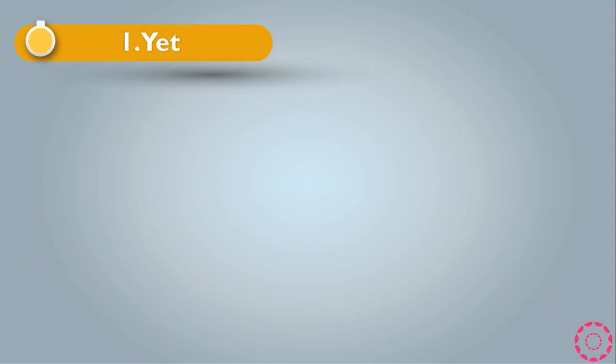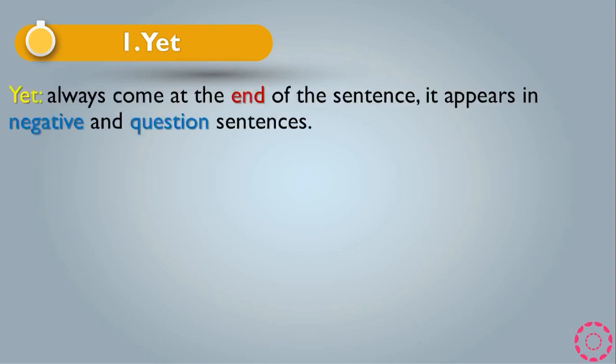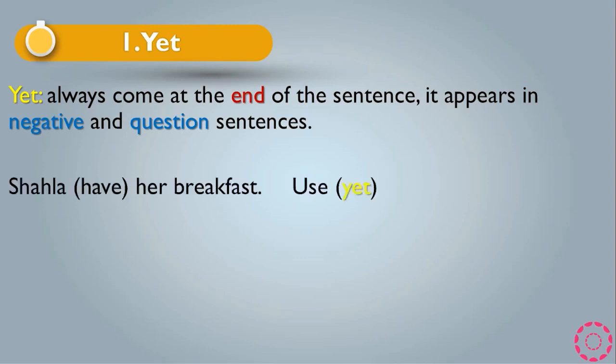Now we talk about 'yet' with present perfect. Yet always comes at the end of the sentence. It appears only in negative and question sentences. We cannot use yet in positive sentences.